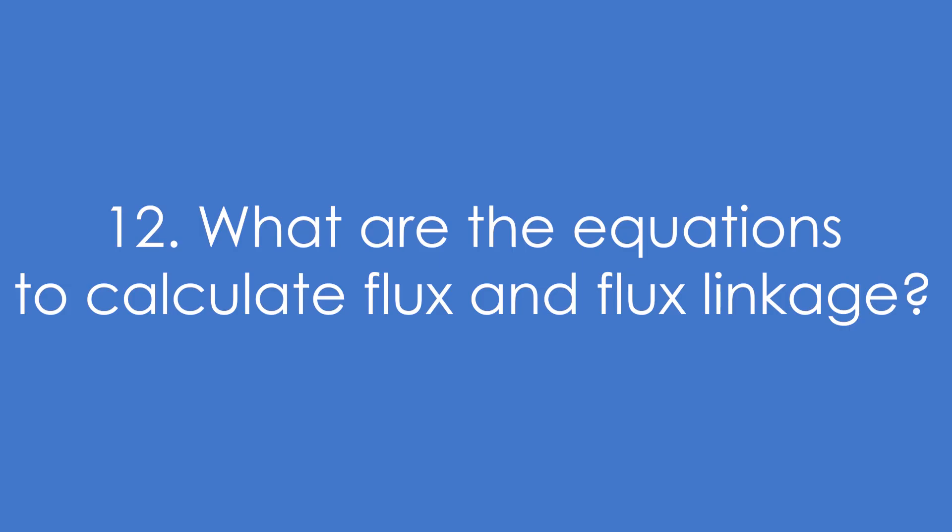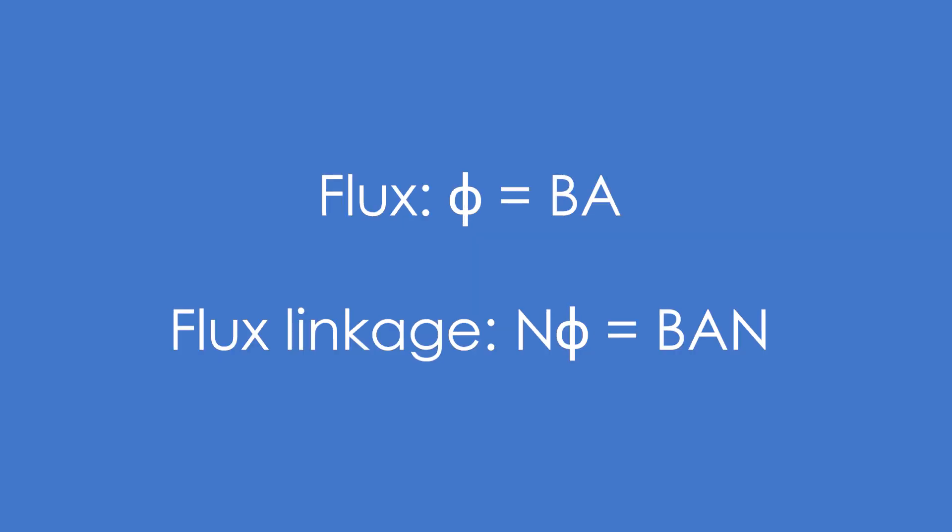Question 12: What are the equations to calculate flux and flux linkage? Flux equals BA — flux density times area of the coil. Flux linkage is just the number of turns times this, so BAN.